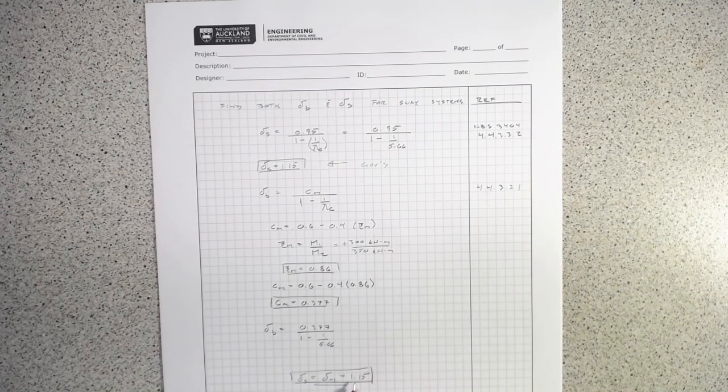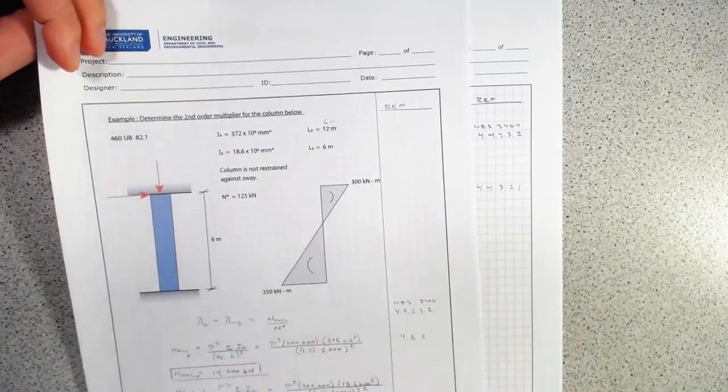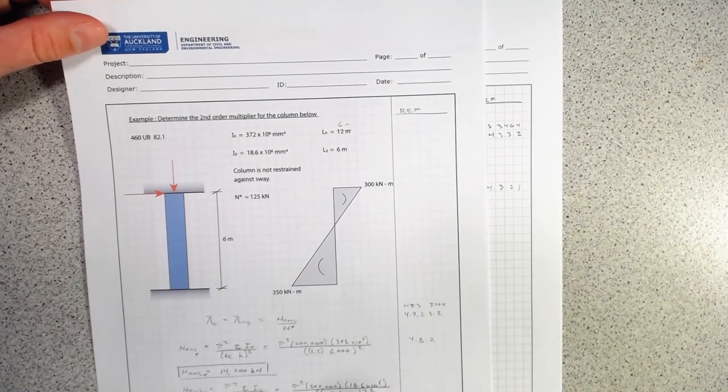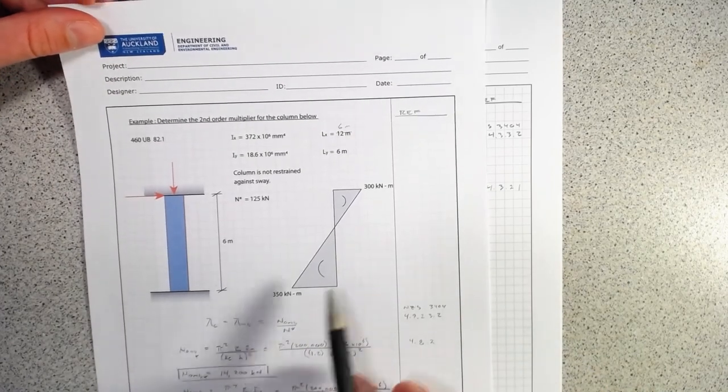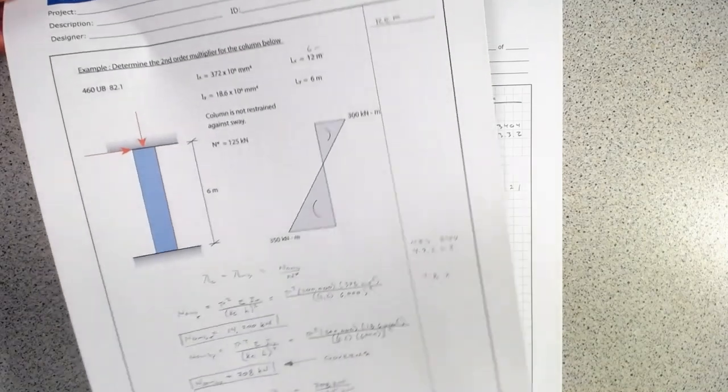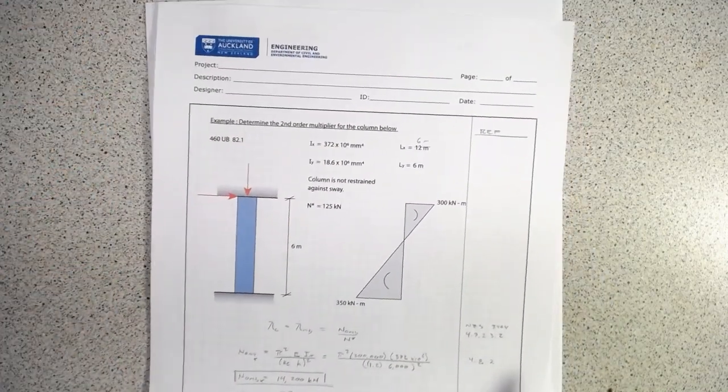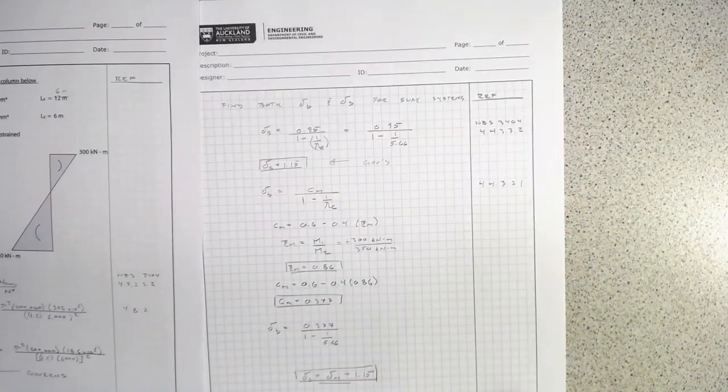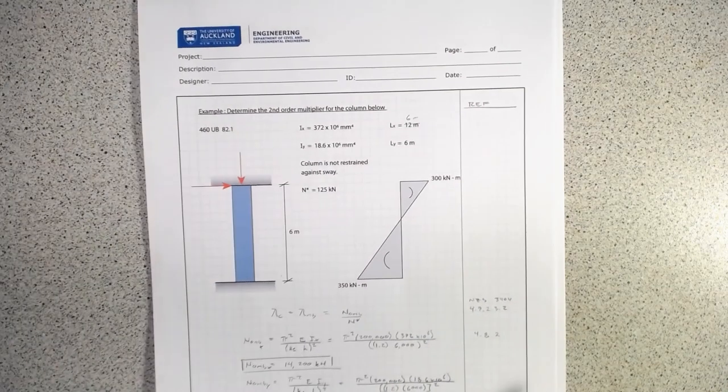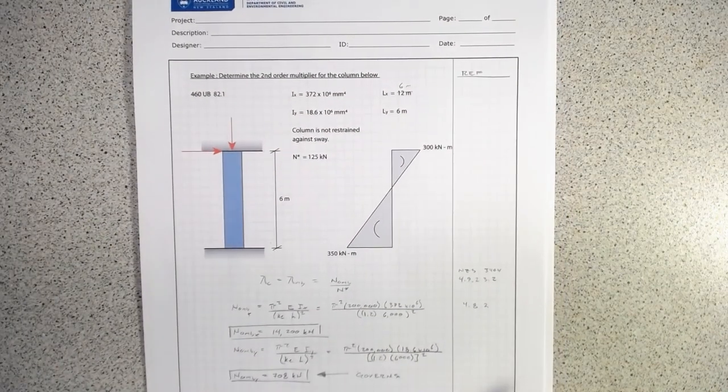What we would do is take this 1.15 and multiply it by our first order moments, scale those up, and that will account for this additional moment demand coming from our second order sway. I hope that you found that useful and thanks for watching.